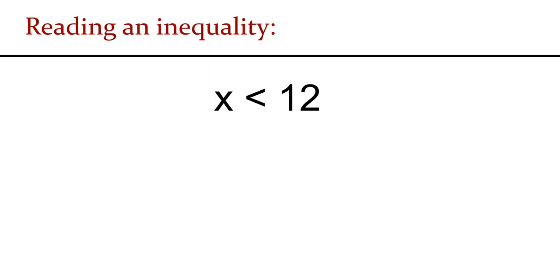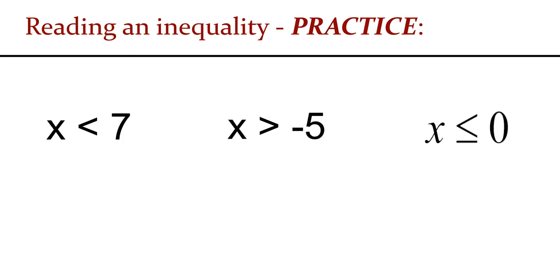After reading an inequality, we can find examples of numbers that make it true. Practice reading these inequalities from left to right and give three examples of numbers that make each true: what are three numbers less than seven, and use the other two inequalities shown as well?